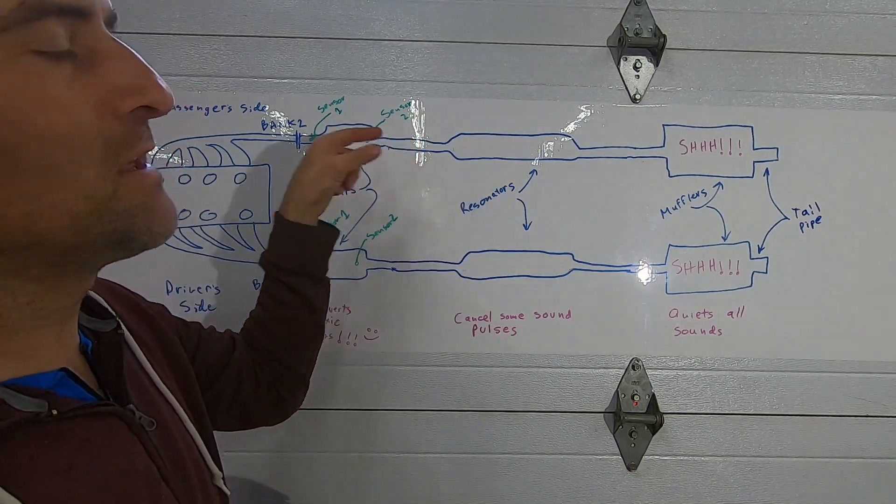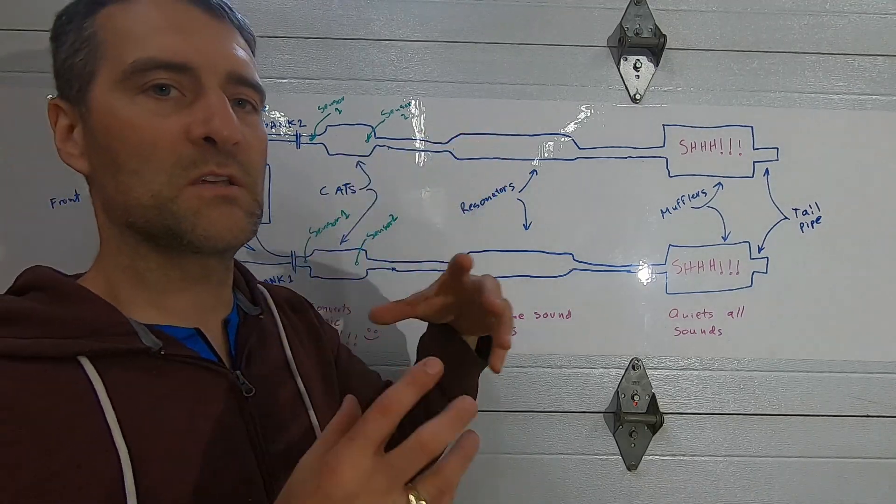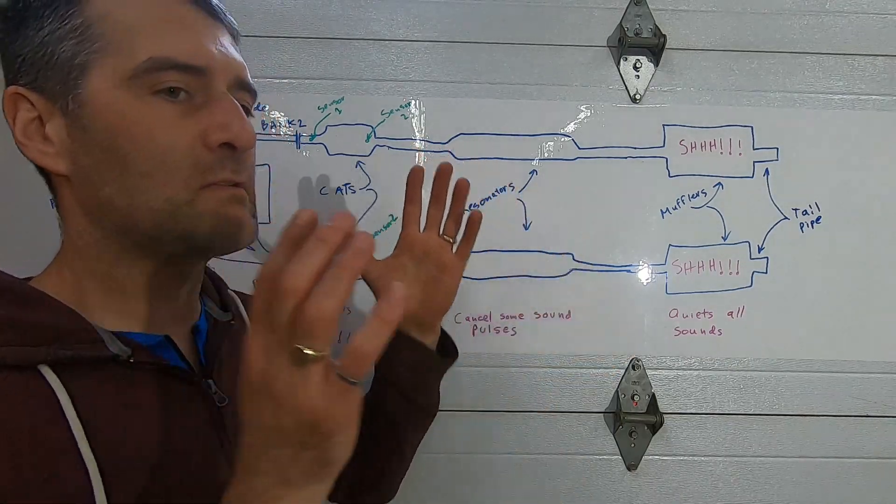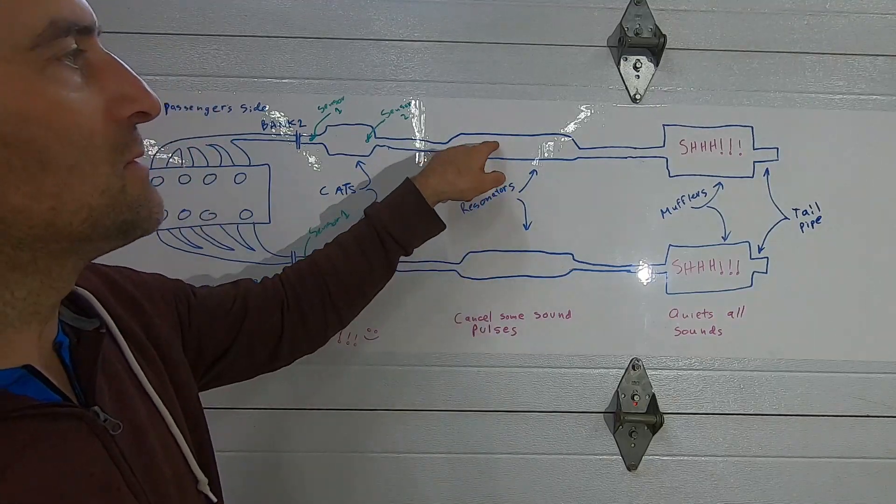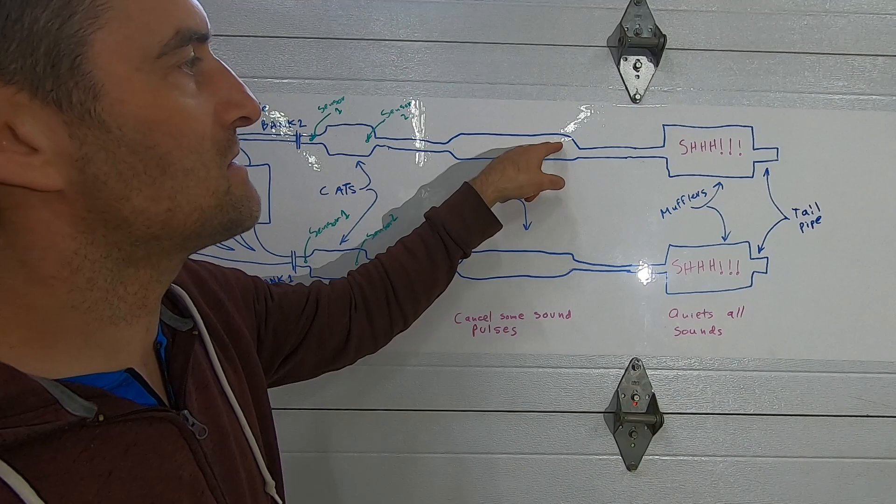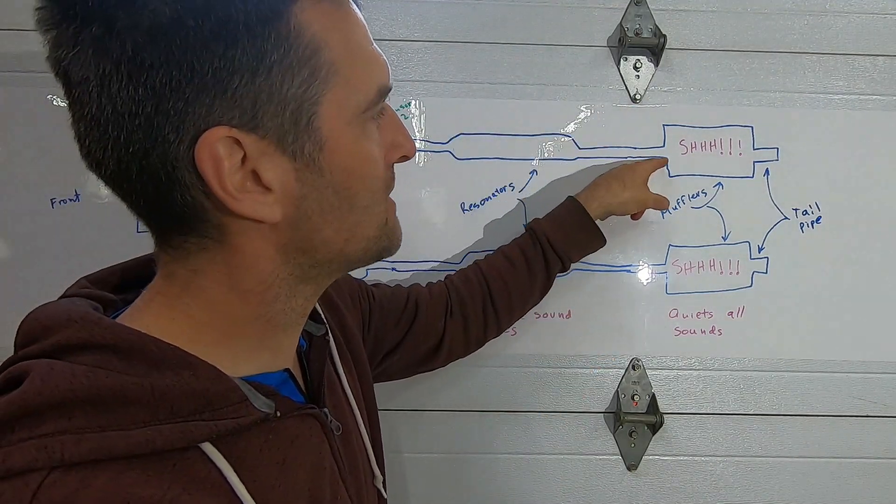Now we have the converted gases heading down to the resonator. When those sounds go through the pipe they don't really cancel each other, but when they go through the resonator, some of the sounds are sort of equal and opposite and when you add them together they cancel each other. Some of the sounds are cancelled out as the gases flow through the resonator.